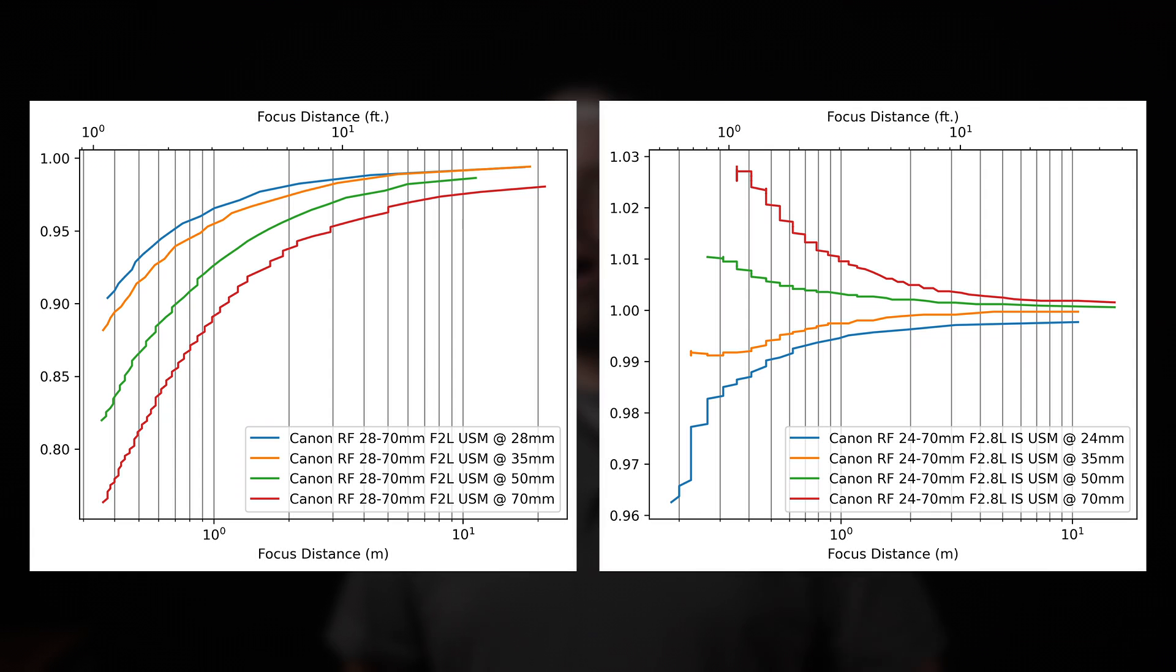The 24-70 also underscores another point in the overall discussion on breathing, which is that you cannot just assume that an internal focus lens will always behave the same way. In the case of the 28-70, which I put up the video and I'll link to, the lens always got wider as it was focused closer. Here, however, we see that the angle of view gets wider at the shorter focal lengths, but gets narrower at the longer focal lengths.